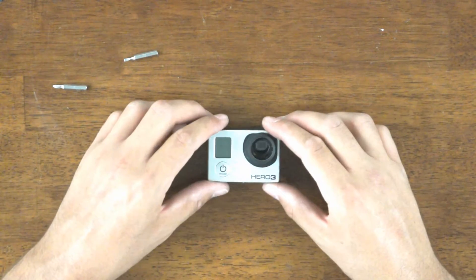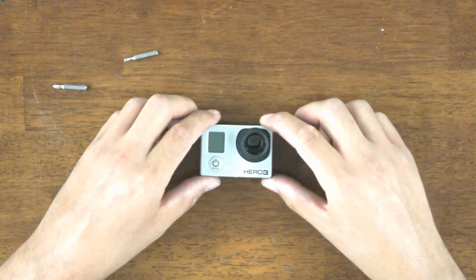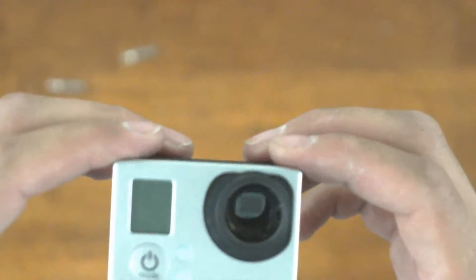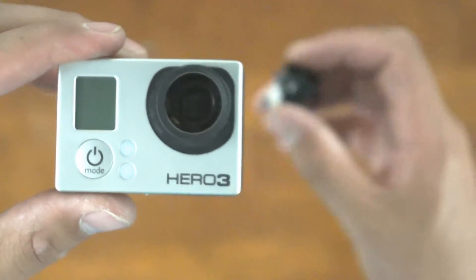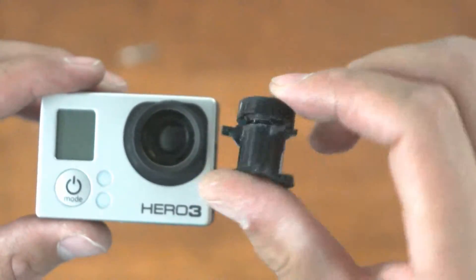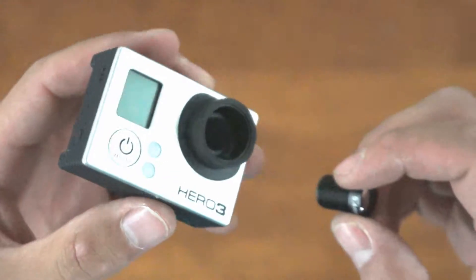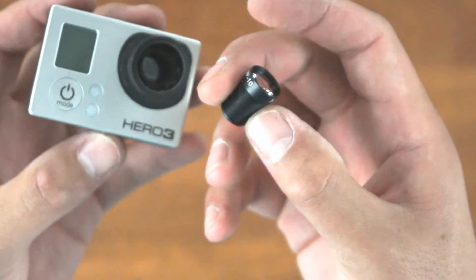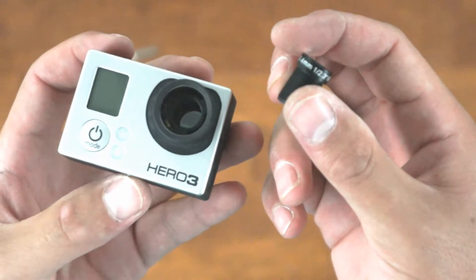Okay, so that was installing a super mount into a Hero 3 Black. The stock lens and lens mount. And now we want to install the 5.4 millimeter, which normally cannot be installed into the Hero 3 Black.